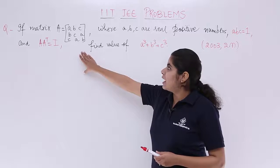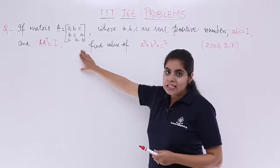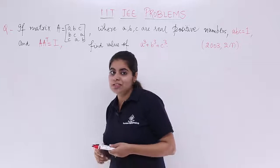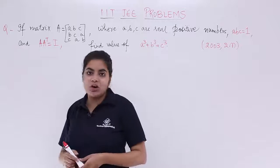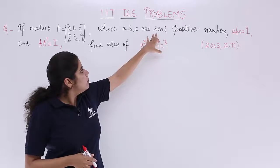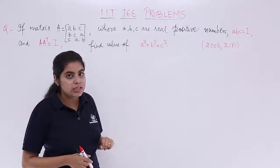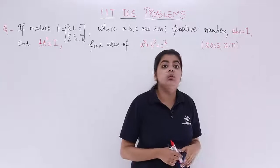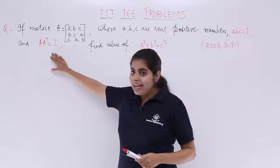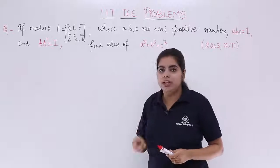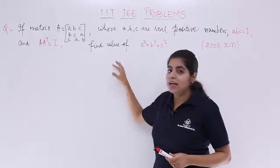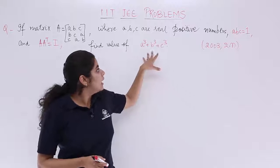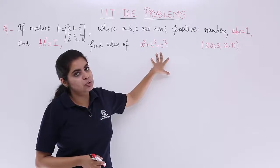Let's read the question. Matrix A is equal to a 3×3 matrix with 3 rows and 3 columns. Here A, B, C are real positive numbers, and two conditions are given: ABC = 1 and AA transpose = I. We have to find the value of A³ + B³ + C³.